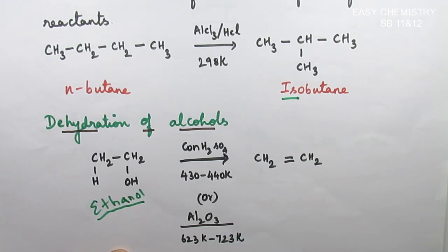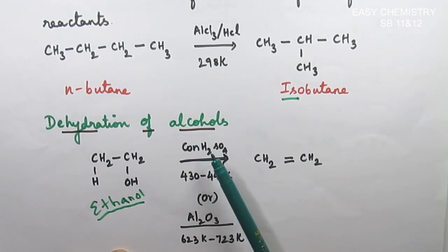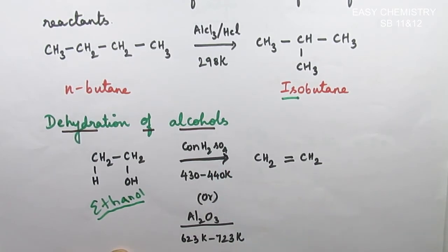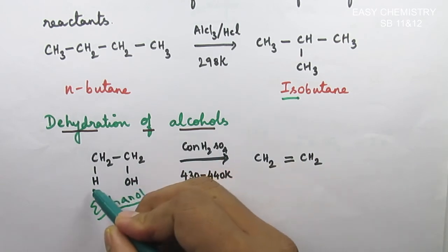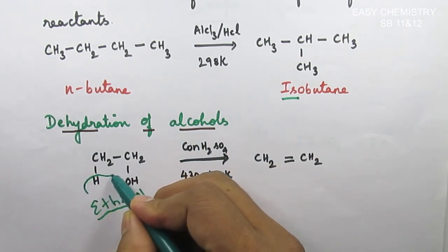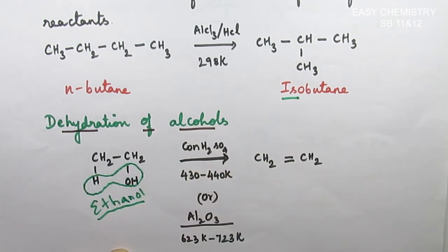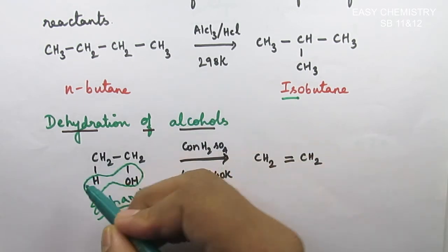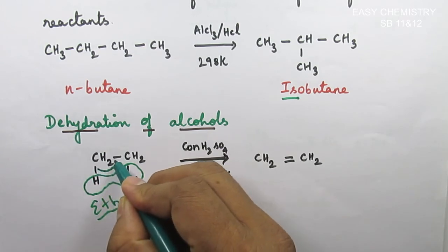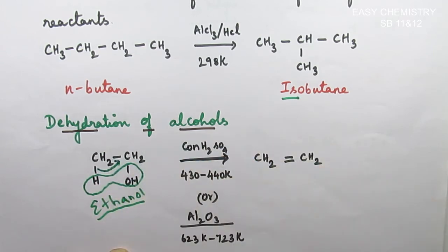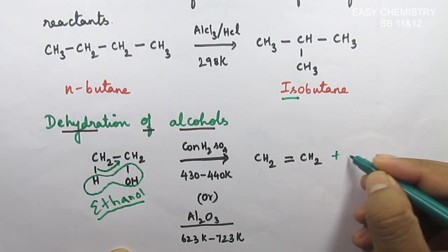We can remove water molecules from the alcohol using concentrated H2SO4 in a dehydration process. With this, the two groups form a double bond, giving us CH2=CH2 (ethylene), and water is removed as a by-product.